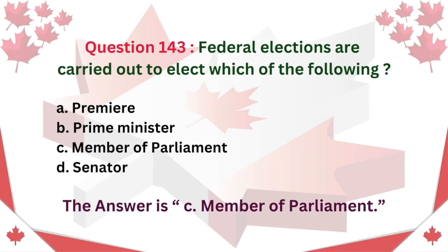Question 143: Federal elections are carried out to elect which of the following? A. Premier. B. Prime Minister. C. Member of Parliament. D. Senator. The answer is C: Member of Parliament.